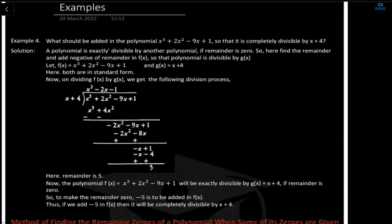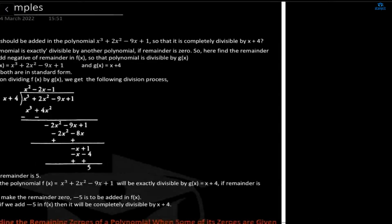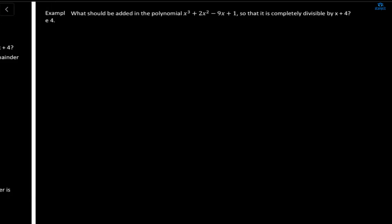Now, here everybody, you can see the example of what should be added in the polynomial. This is a different criteria of question — it is telling you what should be added in the polynomial x³ + 2x² - 9x + 1 so that it is completely divisible by x + 4. If you are going to subtract the remainder and add that value in the given polynomial, then it will be completely divisible.